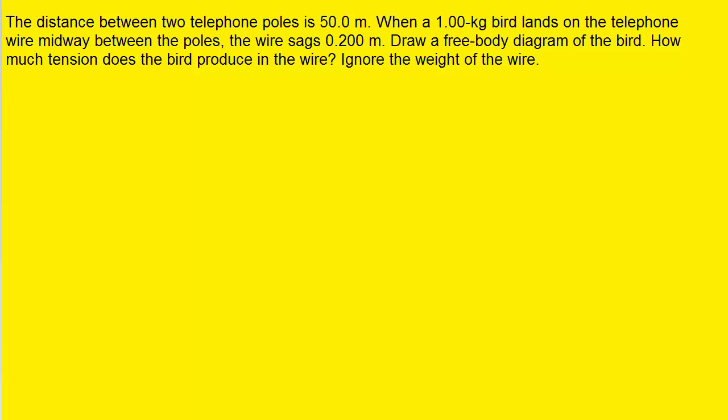We're going to go ahead and draw a picture that represents the information described in the question. In the center of the picture we have the bird standing on this wire, and because of the weight of the bird the wire is going to bend downward.